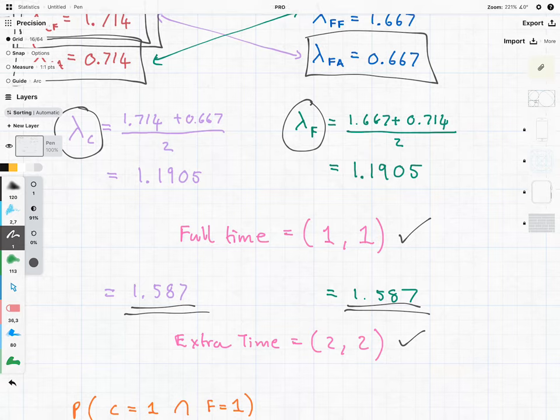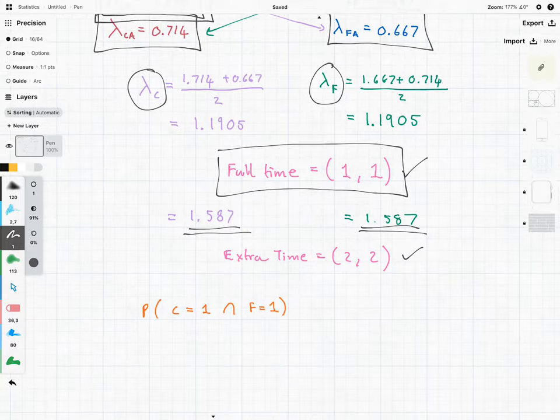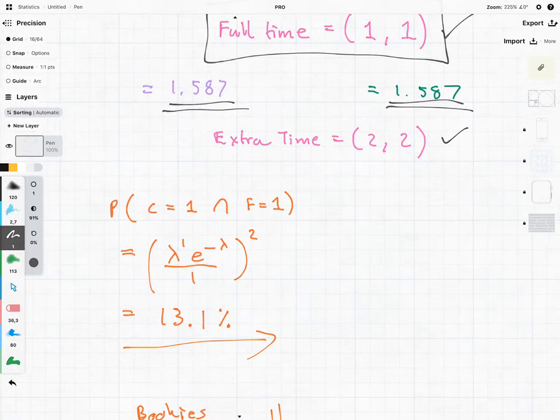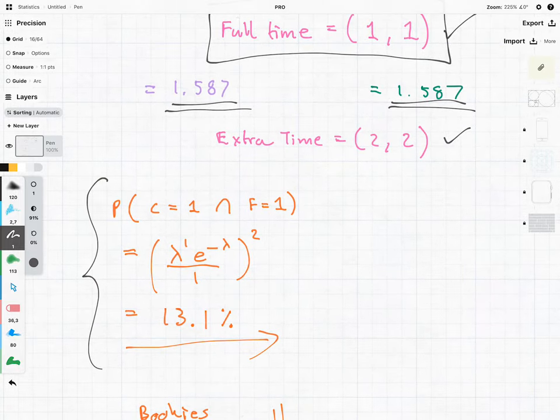Of course, the score of 1-1, before you go run out and bet on it, it's important to know the odds of that actually happening. And I did that here using the Poisson distribution. And the actual odds of it being 1-1, though it's the most likely thing to happen according to this model, it is only 13.1%.